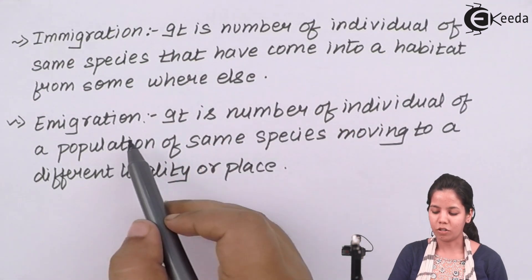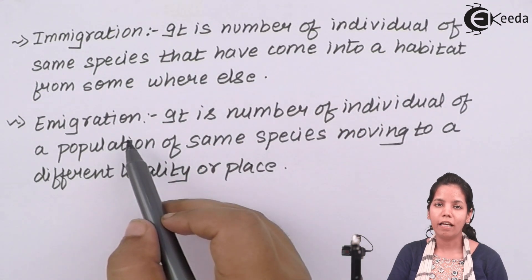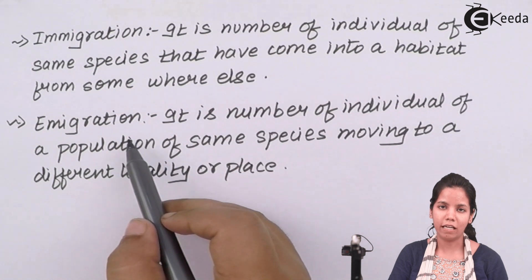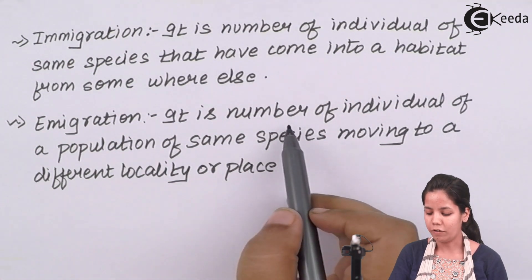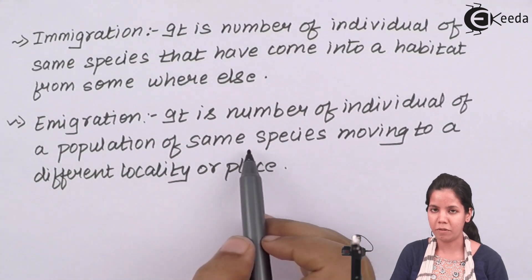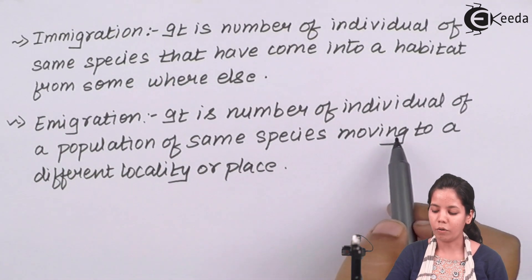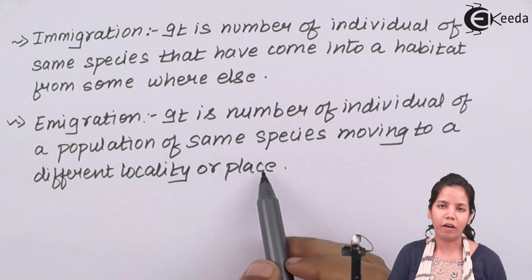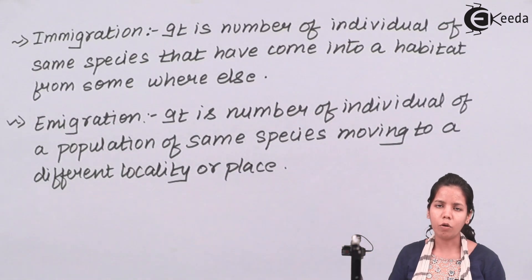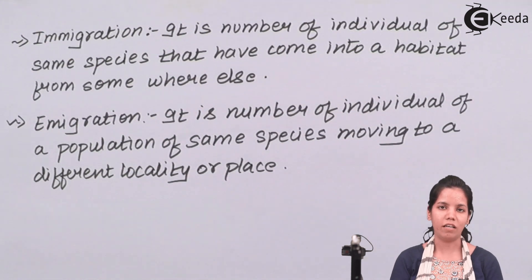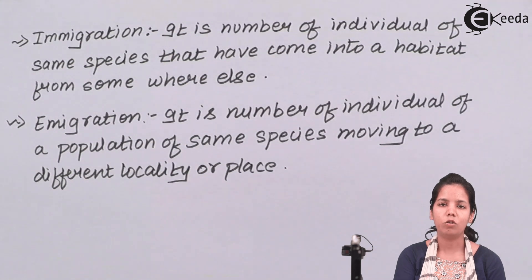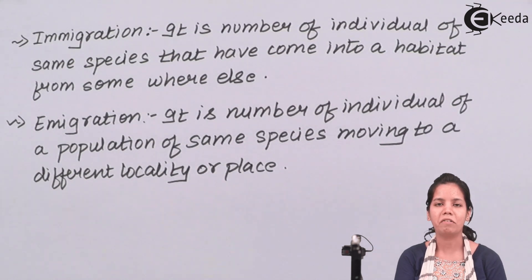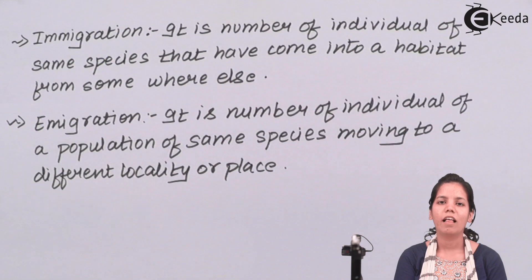Emigration is the number of individuals of a population of same species that are moving to different localities or places. For example, people moving to different states like Europe or US for higher studies, jobs, survival and other amenities. Both of these cause strain on the density of population of a particular state or country or locality. I hope students you are clear about this concept of density of population. Thank you.